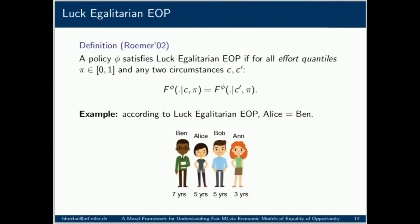In our employment example, Lucky Egalitarian EOP suggests we look at everyone's rank in terms of years of education among applicants of their own gender. Among females, Alice is ranked first and Anna is ranked second. Among males, Bob is ranked second and Ben is ranked first. A Lucky Egalitarian EOP policy would ensure that Alice and Ben have the same wage prospects, and may assign Bob to a less desirable position than Alice even though they have similar years of education. The key idea is that being female has likely played a negative role in Alice's chance of getting more years of education, so the EOP policy should make up for this.